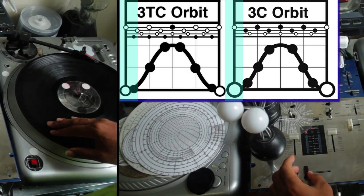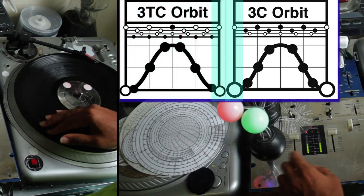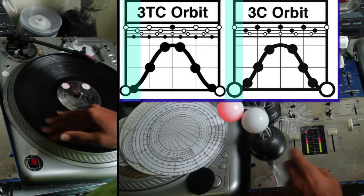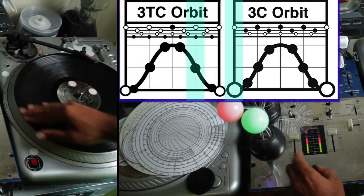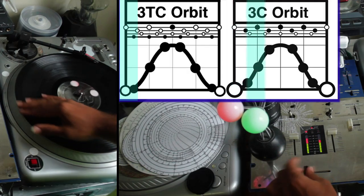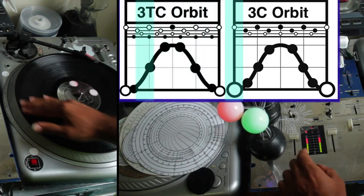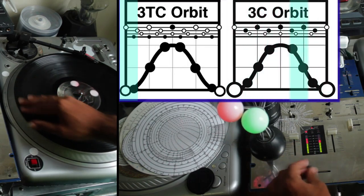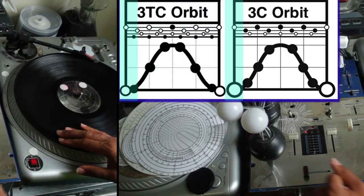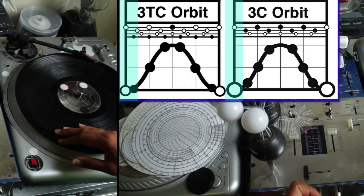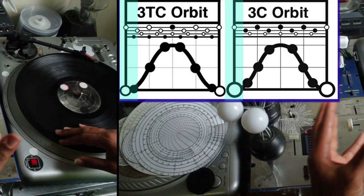Now I'm going to do the triplet three-click, and then merge those two together. We're going to alternate between the triplet three-click and the regular four-four time. One's kind of like in three-four, six-four, or six-eight type of time. This other one is in four-four time.